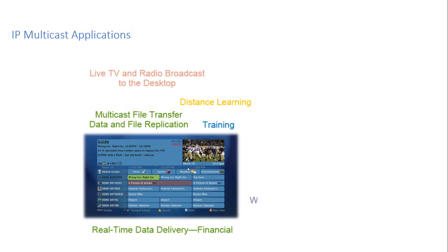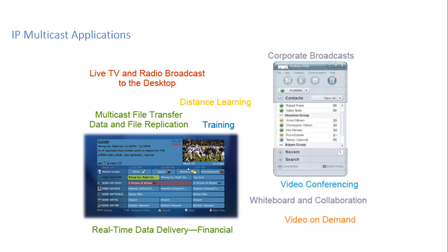Multicast applications for IP multicast include live TV and radio broadcasts to the desktop. A CEO of a company can send out a corporate broadcast. We can use it for video conferencing such as WebEx or other live services with audio and video. Whiteboard and collaboration, or even video on demand, can use multicast so that a stream only has to be sent to your area one time. There are lots of uses for multicast in enterprise networks.